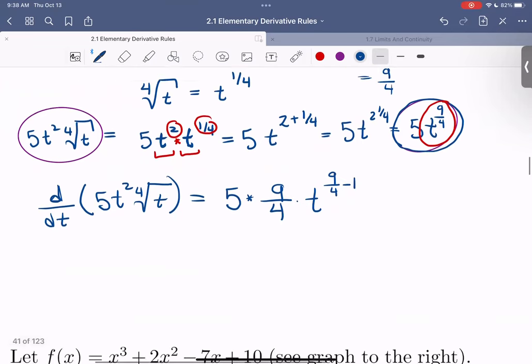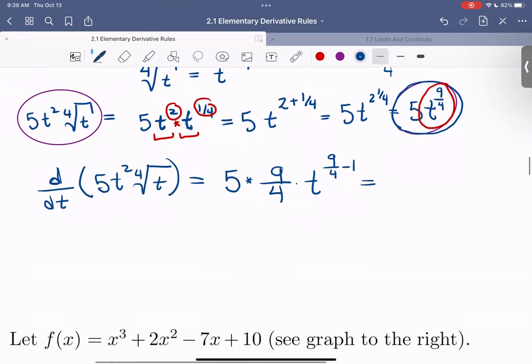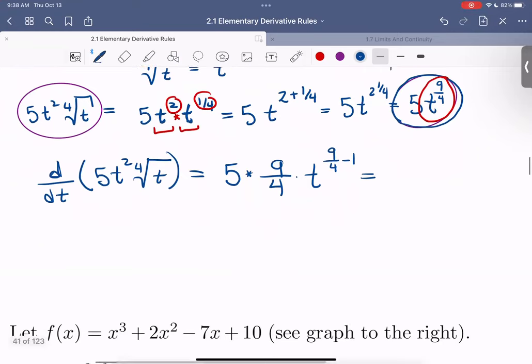Let's simplify that a little bit. Here, 5 times 9/4—we have 5 times 9 is 45, so we'll write 45/4. Now let's consider 9/4 - 1. We're subtracting 1 whole, which is equivalent to subtracting 4/4.